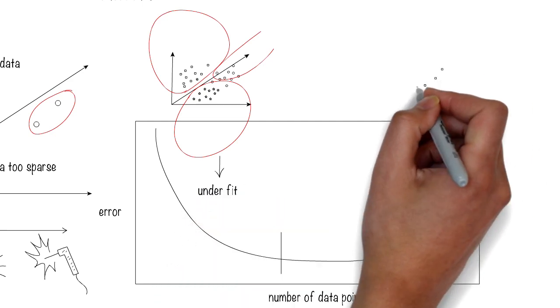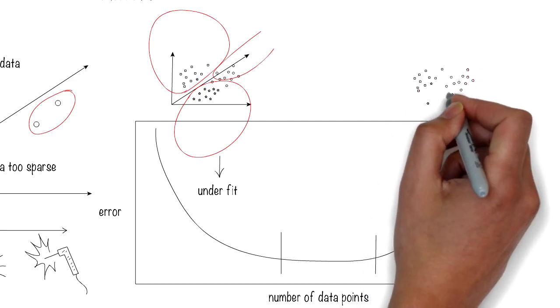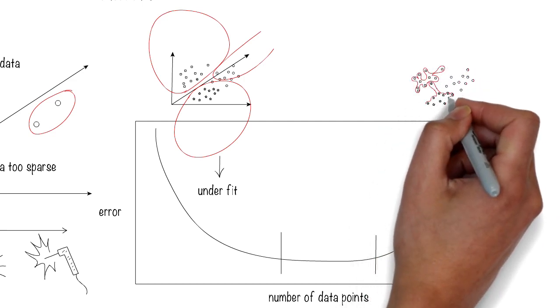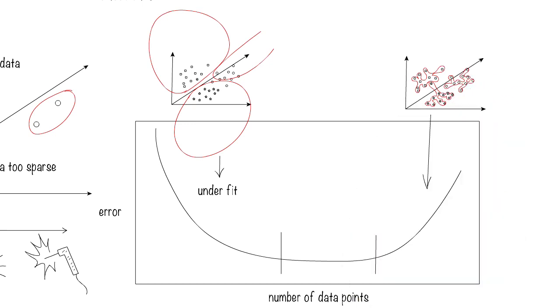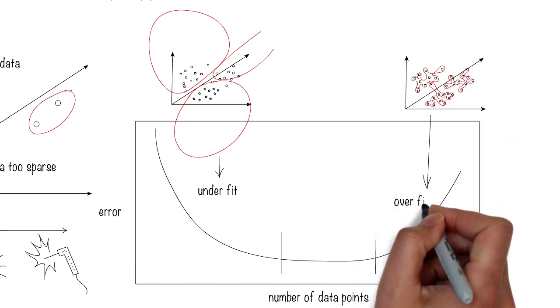If the model is tuned too much to the data, then it could essentially memorize the data, and that results in overfitting, which causes high error rates for unseen data.